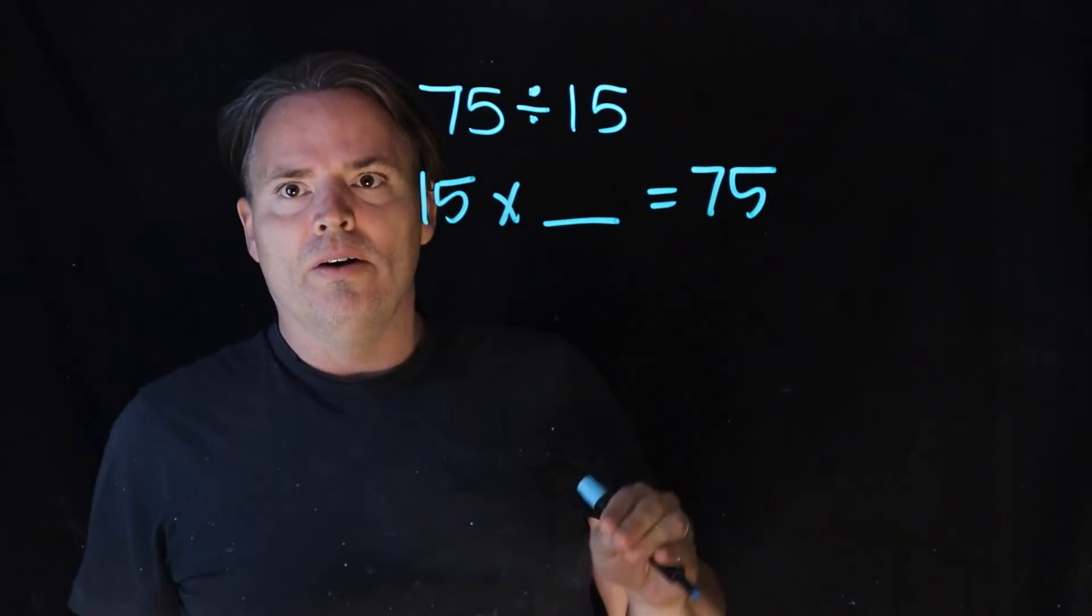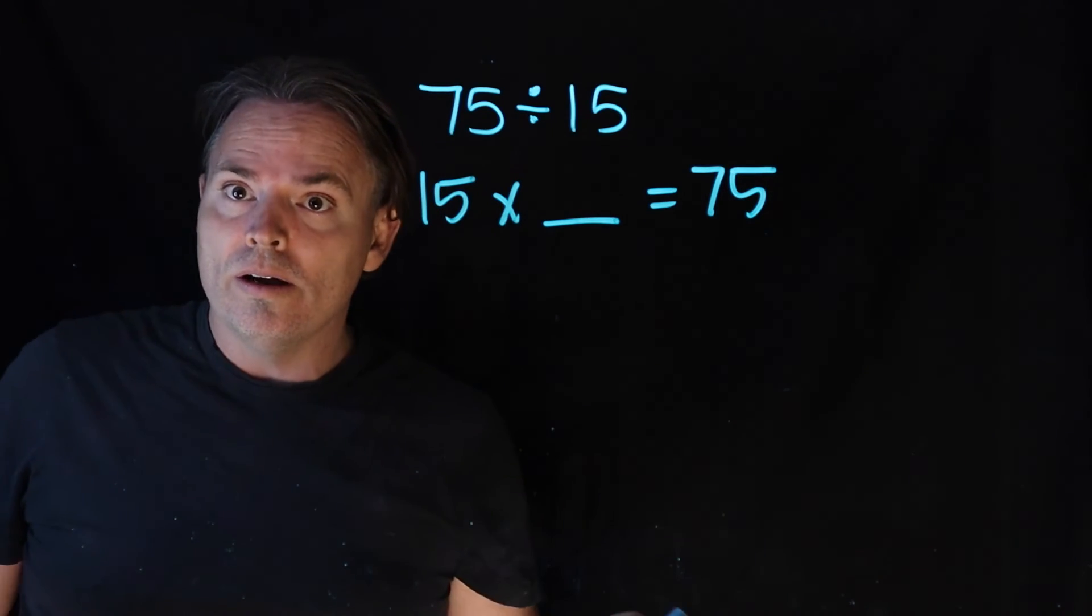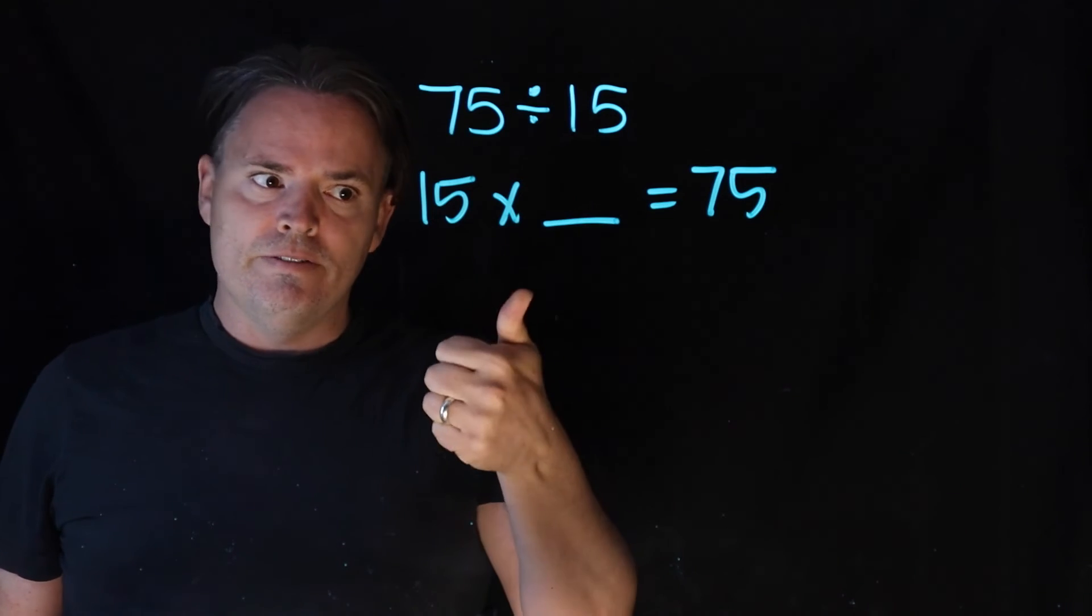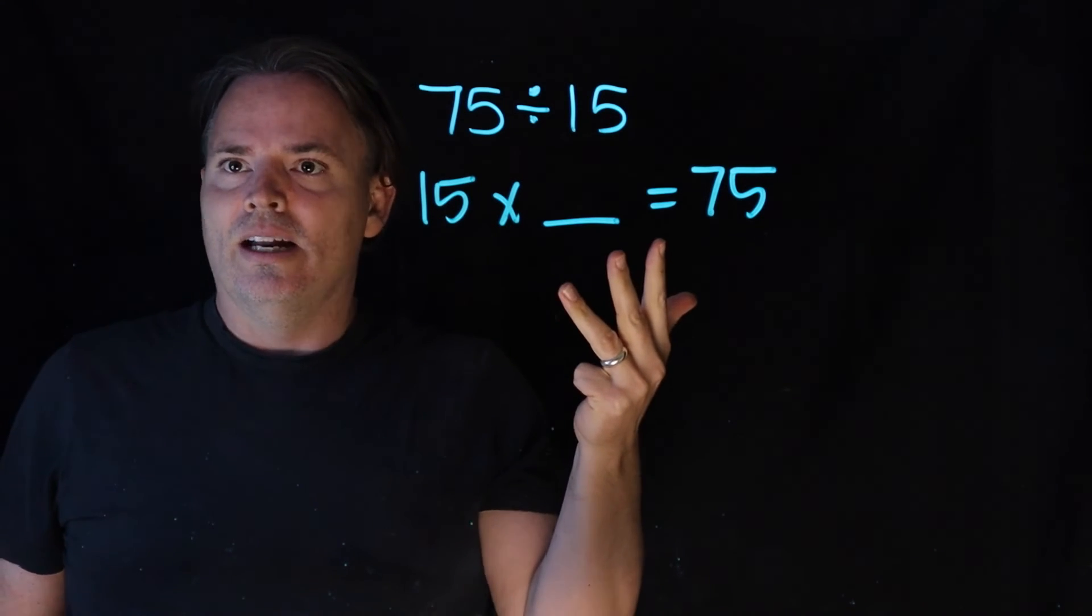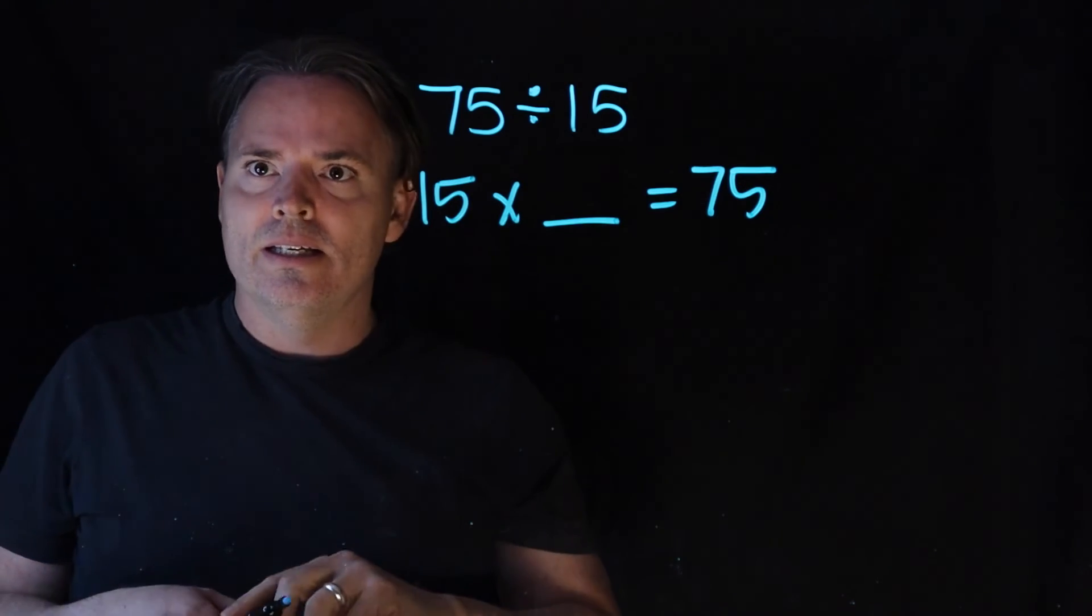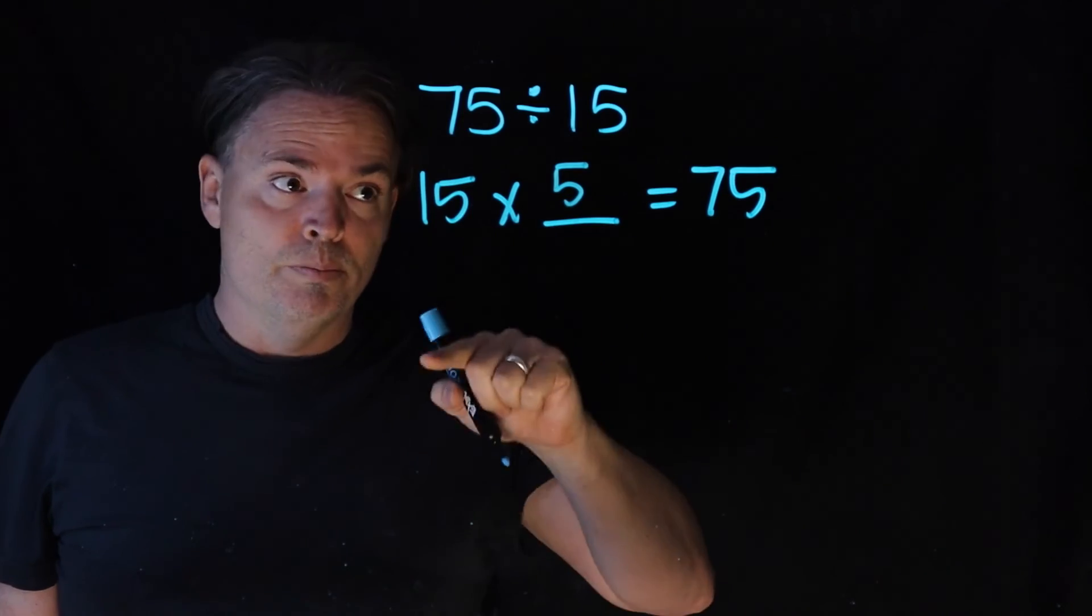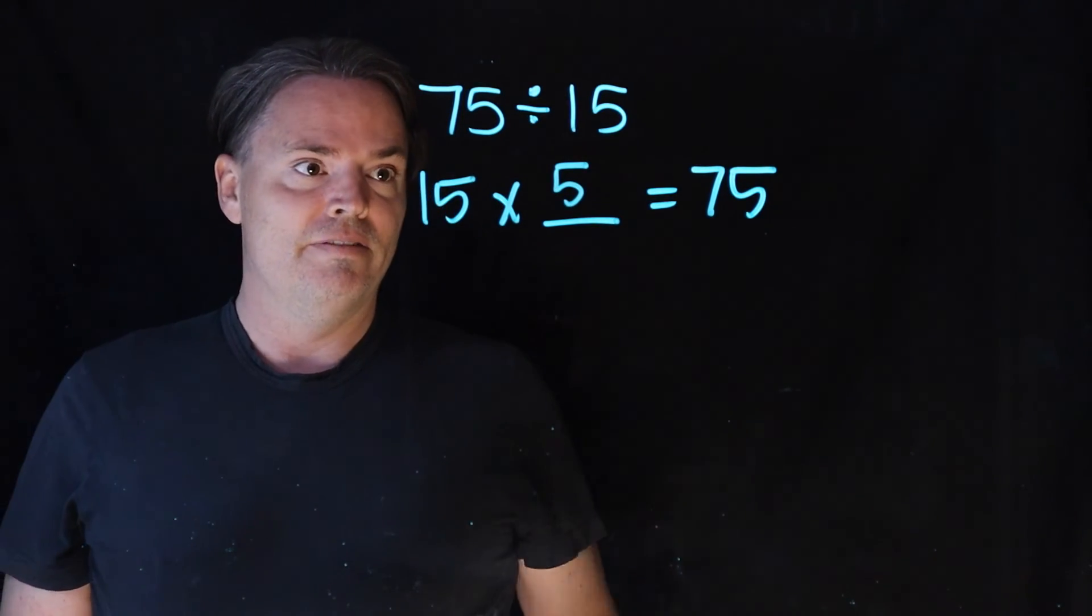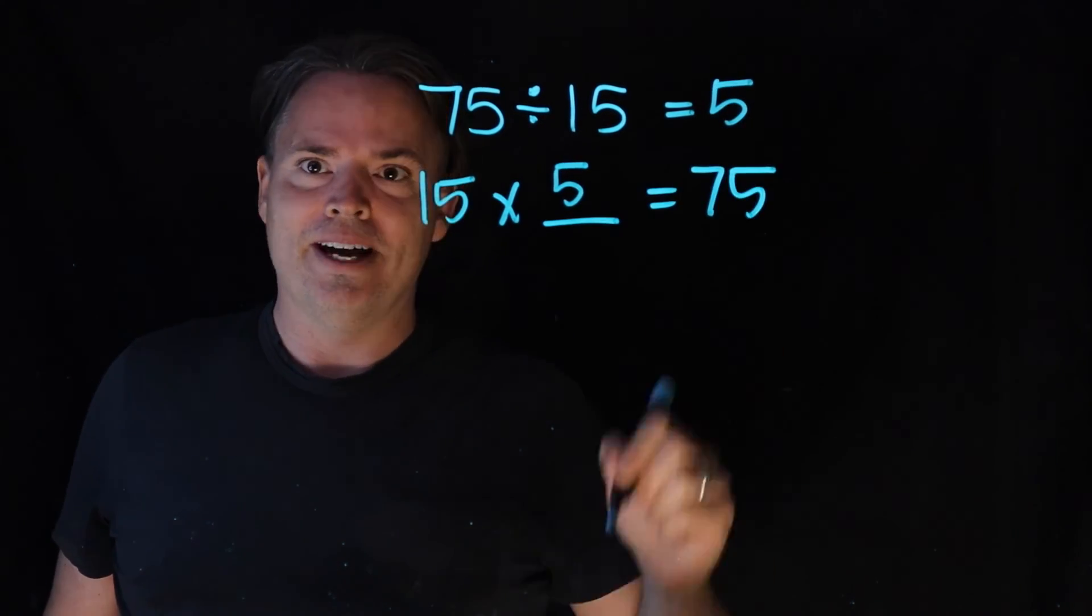And when she looked at that, she said oh, I like thinking about 15s because it reminds her of a clock. And so she knew that 4 would give her 60: 15, 30, 45, 60. And then she said oh, it's 5 because 5 gets you to 75. So 15 times 5 equals 75, which means 75 divided by 15 equals 5.